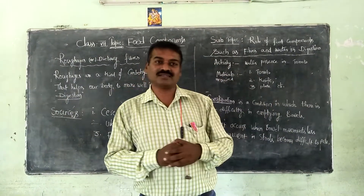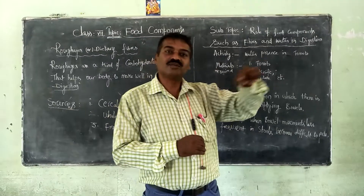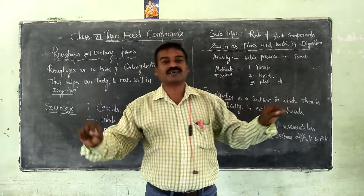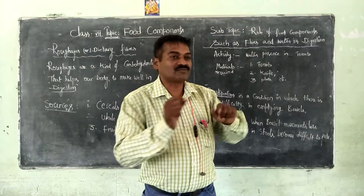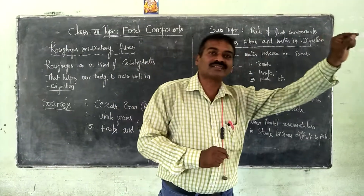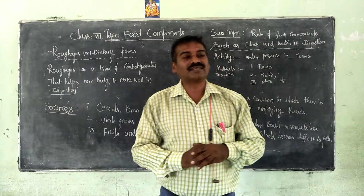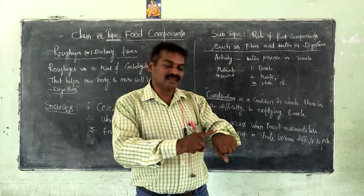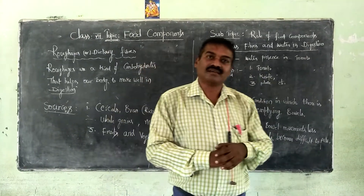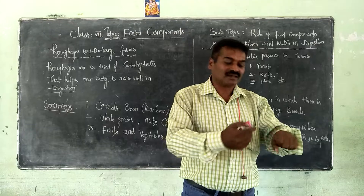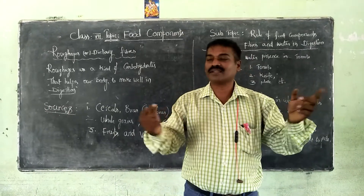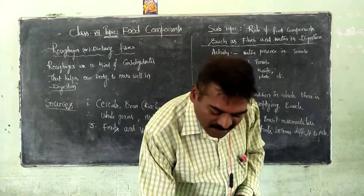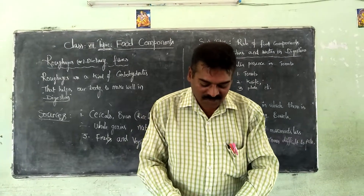That glucose is then included in the blood and transferred to various parts of the body, providing energy. For example, the eyes require vitamin A, and the skin requires carotene, which is available from carrots or from leafy vegetables.